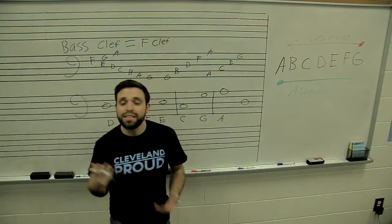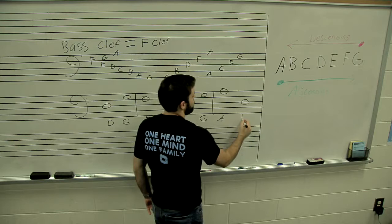For this next one, we have F, G, A. I'm counting both the lines and the spaces. And then descending, F, E, D. So this is D.